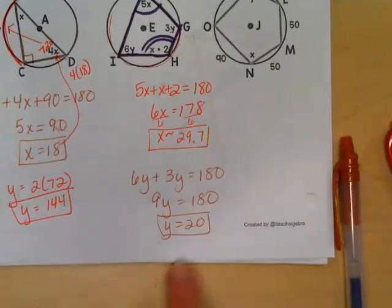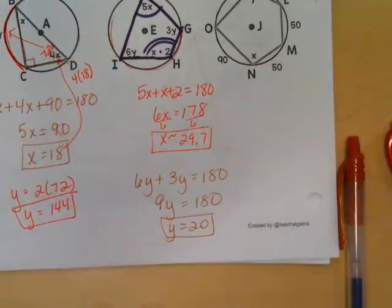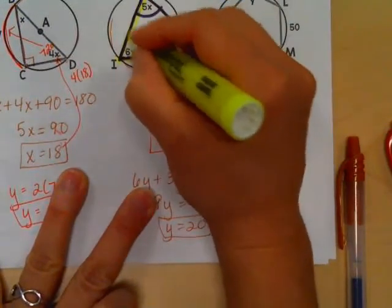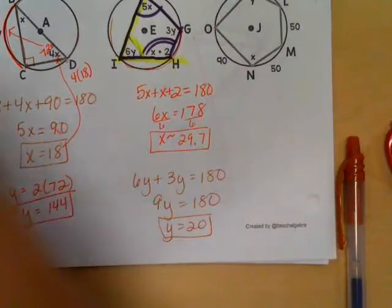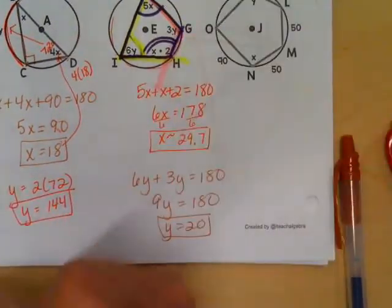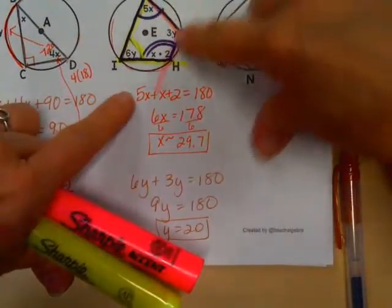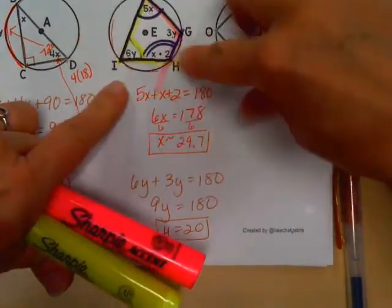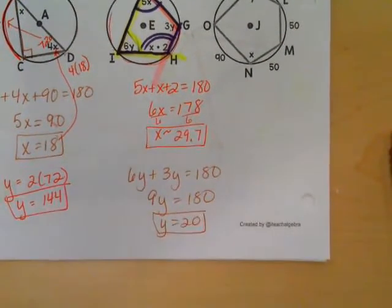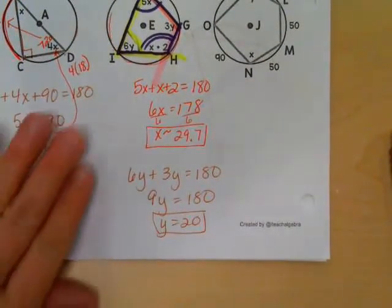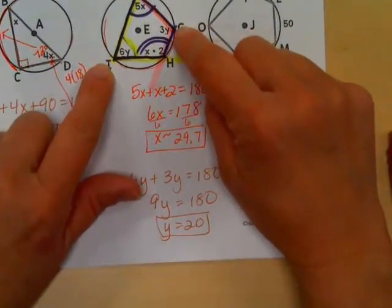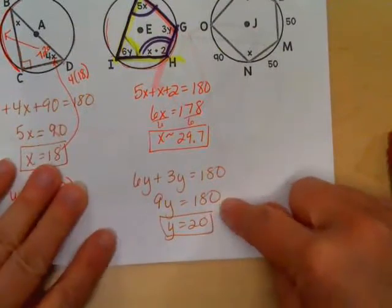Okay, hopefully you found that Y was 20. Because, again, 6Y covers this angle. 3Y covers the opposite angle. And together, they're covering the whole circle. They're intercepting the whole circle. So if you add those two opposite angles together, they're going to equal half. Intercepted arcs. Inscribed angles equal half of their arcs. So half of the whole circle is 180.